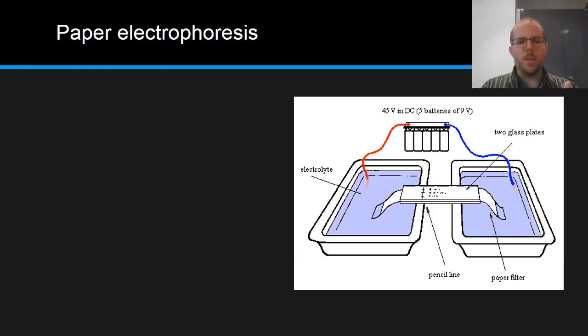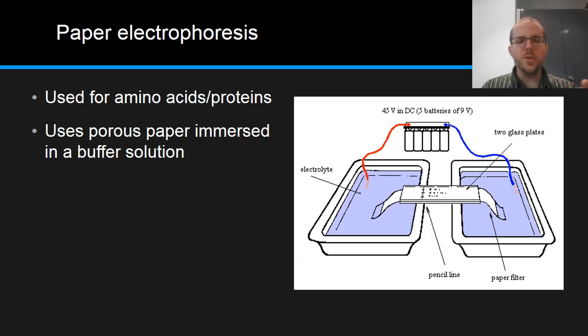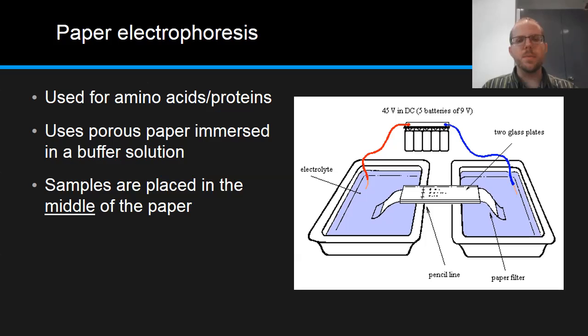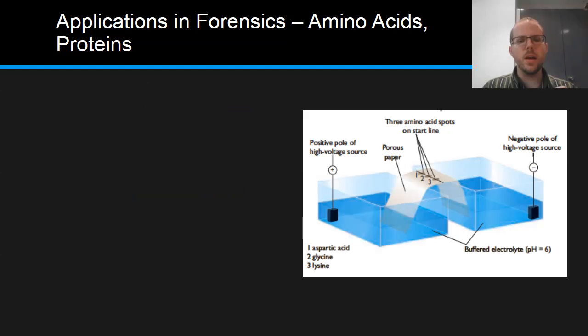The first process that we're going to look at is the concept of paper electrophoresis, the first of two main techniques. For paper electrophoresis, which we would use for amino acids or proteins, we use a strip of porous paper like we would use for paper chromatography that's immersed in our buffer solution. Now the buffer solution, its role is to control and maintain a specific pH. That's where the knowledge about the isoelectric point comes in. The samples that we're testing are placed in the middle of the paper.